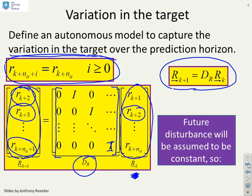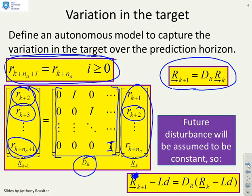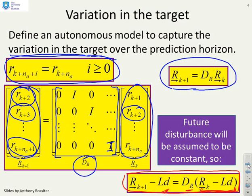We will also have future disturbance information, but the best we can do with disturbances as a rule is assume it's constant. Including the disturbance information into this update equation, we get R_future minus the disturbance at the current sample multiplied by the shift, giving R_future minus the disturbance at the next sample. This is the equation we'll probably be using.